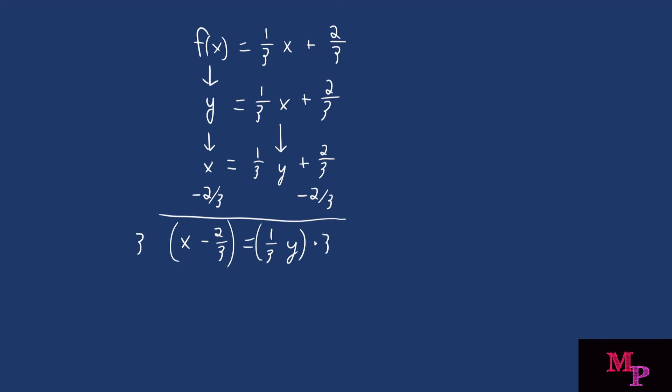And three times one-third is equivalent of three divided by three, which is just one. So that crosses out.